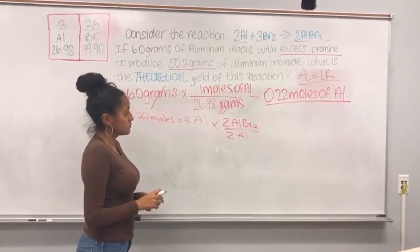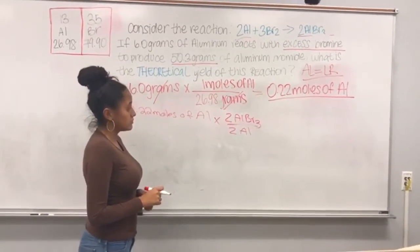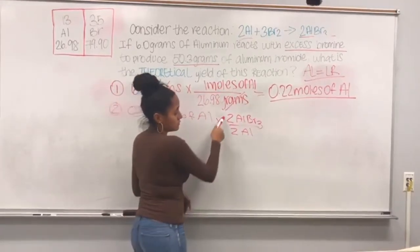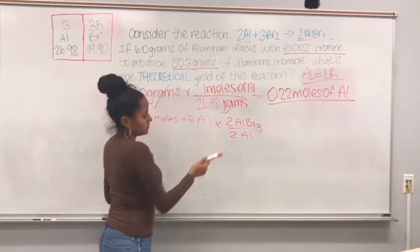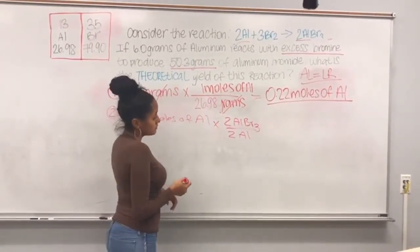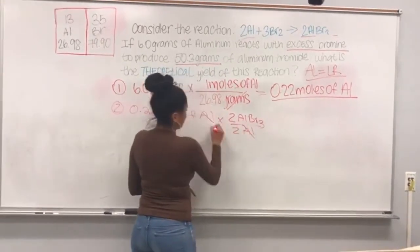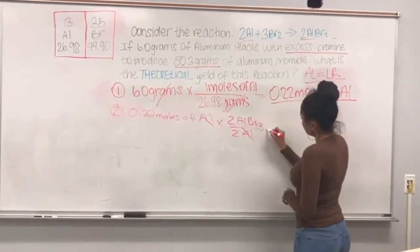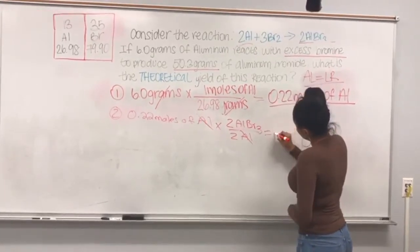By doing this, we multiply our moles by 2/2. We cancel out Al on both sides, which gives us 0.22 moles of AlBr3.